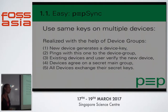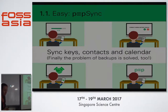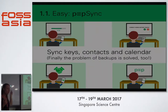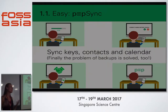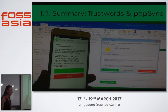Another part where we're trying to make it easy is solving the problem of syncing keys across various devices. This is still in testing. We do this with the help of device groups: a new device generates a device key and pings the device group, existing devices verify the new device with fingerprints, they do the handshake, agree on a secret key for the group, and then all devices exchange their keys. This also enables syncing contacts and calendar, and solves the backup problem without the cloud — using your own devices instead.